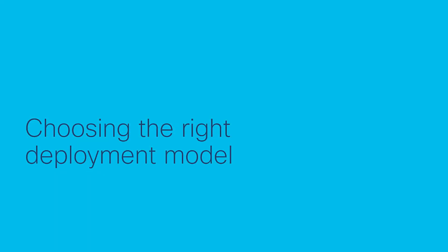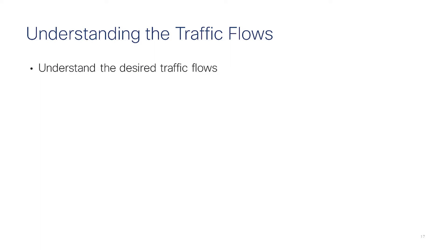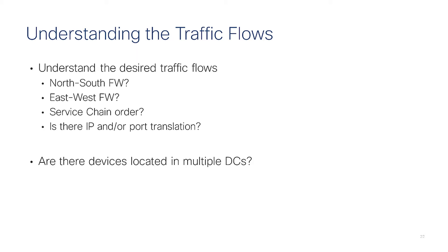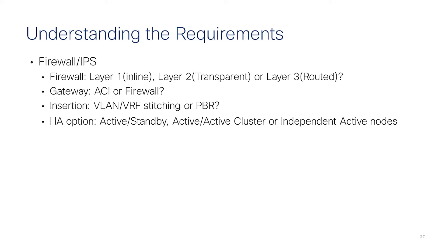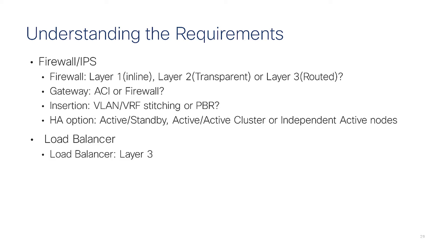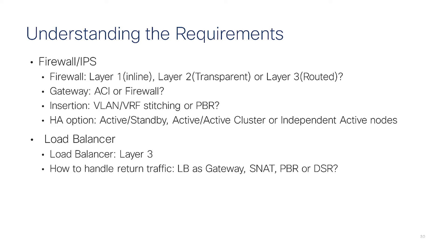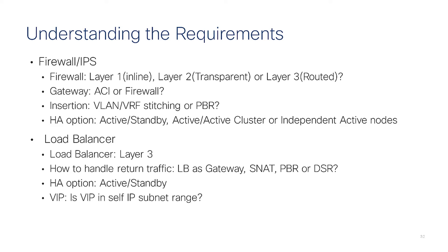Let's talk about choosing the right deployment model. First, you need to understand which traffic flows you want to protect with the firewall — is it north-south or east-west? Are there devices located in multiple data centers? Do you need to deploy a layer one, layer two, or routed firewall? Which device should be the default gateway? Which chaining model do you want to use? And if it's a load balancer, how do you want to handle return traffic — is the VIP address on the same subnet as the load balancer interfaces?